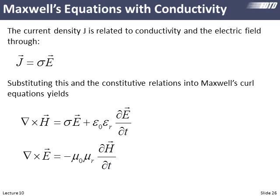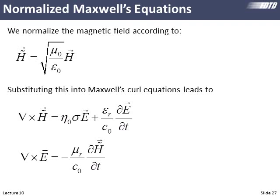We normalize the magnetic field and put it into Maxwell's equations to get a familiar-looking form. We'll follow the exact same procedure as before to derive update equations: normalize, simplify, expand into component equations, apply finite difference approximations, reduce to one dimension, then solve for fields at future time values. We leave the conductivity term in and see what happens.